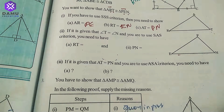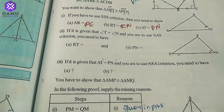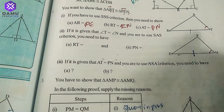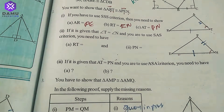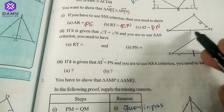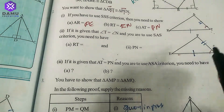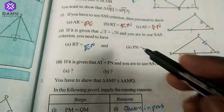If angle G = angle N and you are using the SAS criterion, you need RT = EN and PEN = AT. So RT = EN, and PEN = AT for the SAS congruency type.